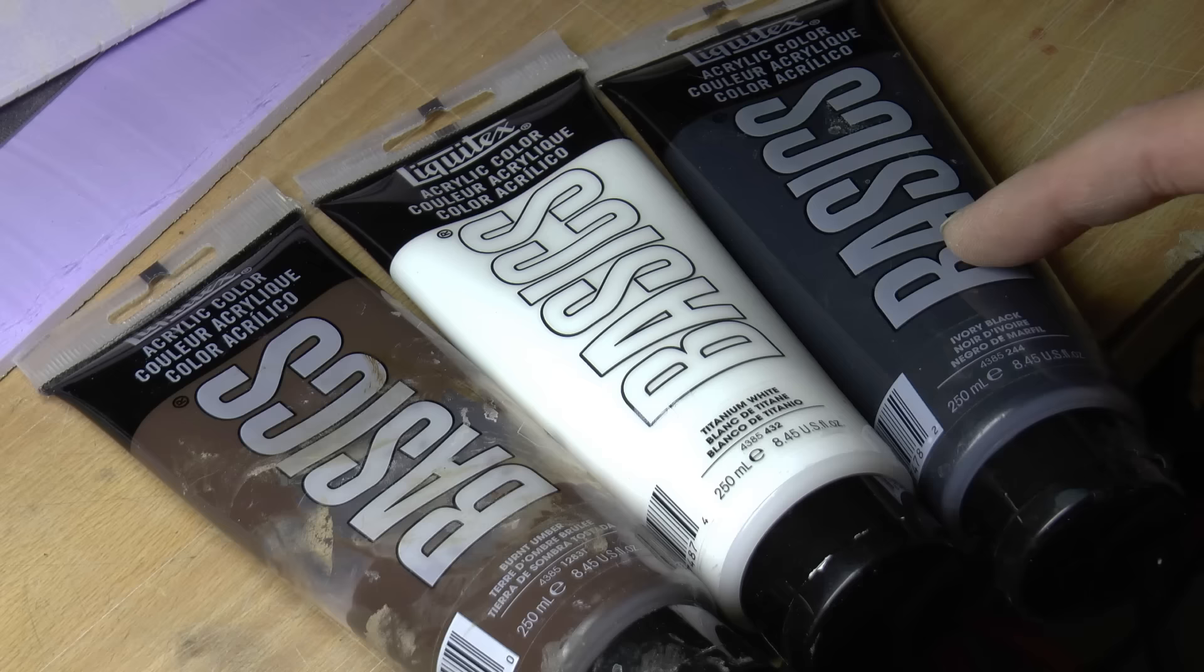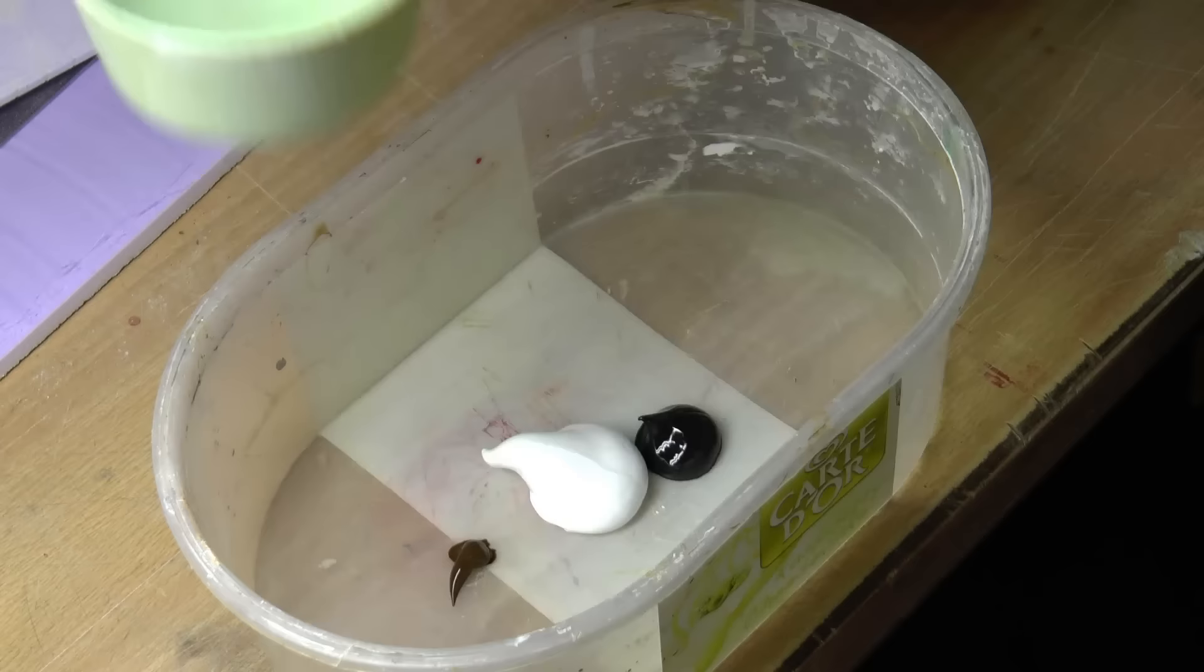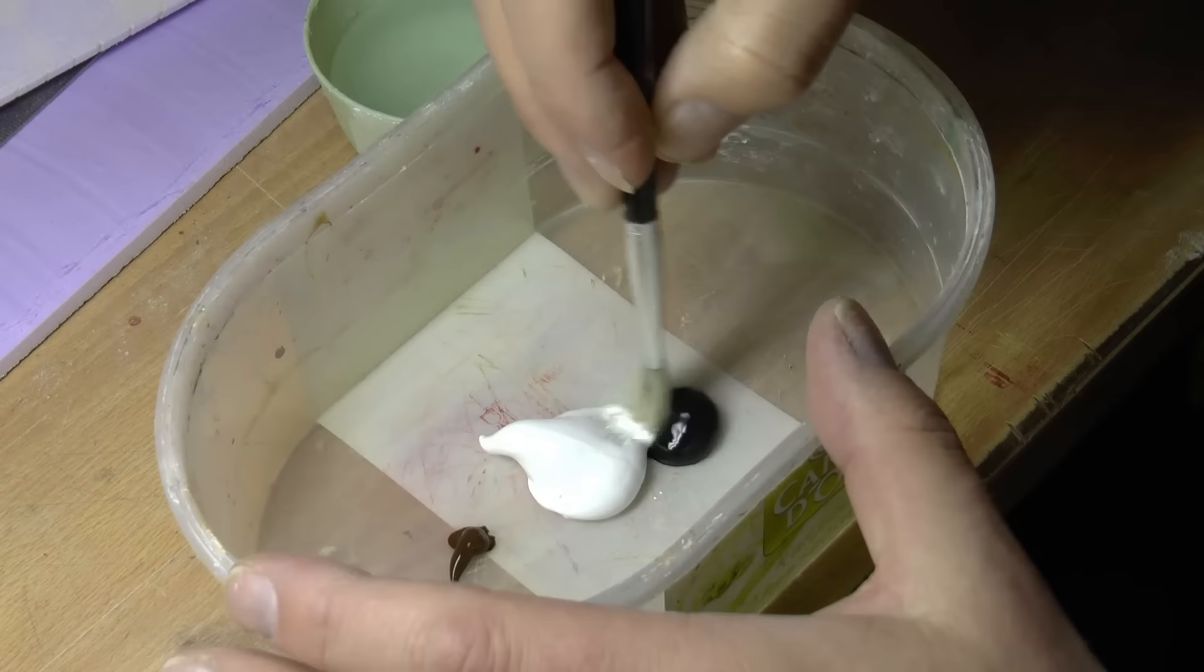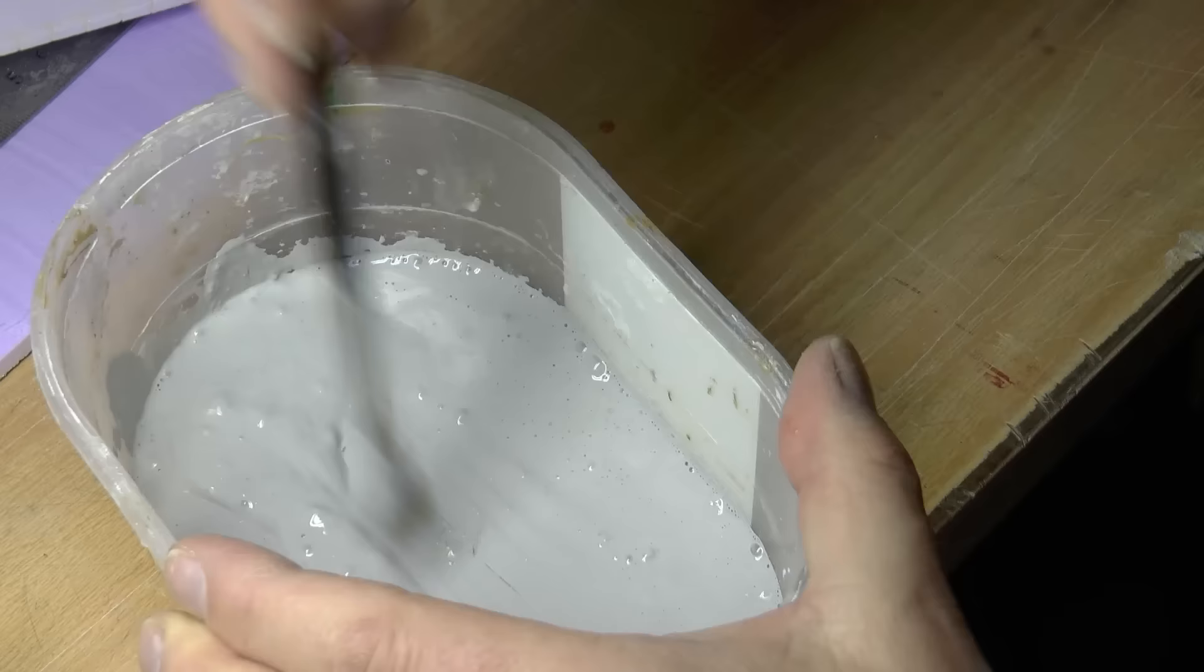Then it's time for painting. I use cheap acrylic colors. This is a ivory black, titanium white and burnt amber. And water as a thinner. As you might have guessed already, solvents is not very good to use on styrofoam because the styrofoam will melt.